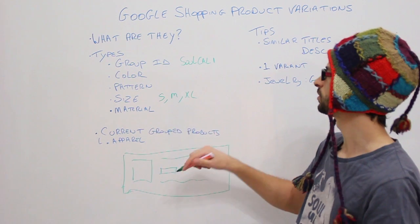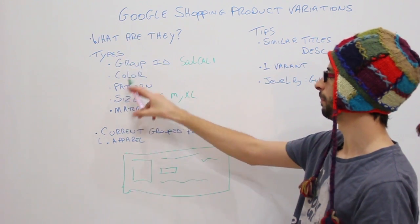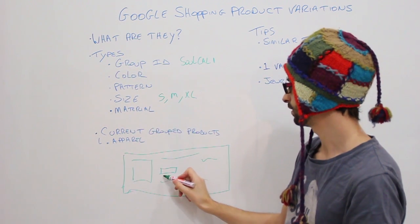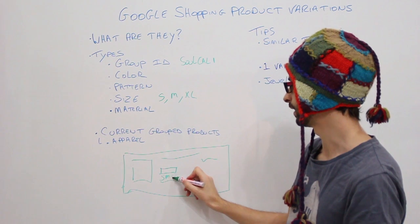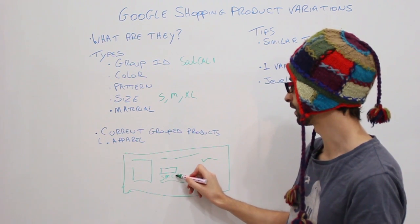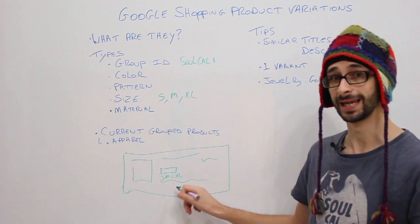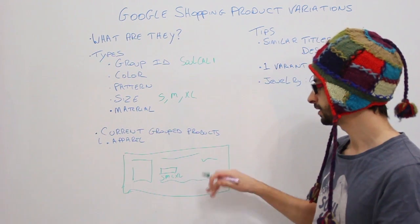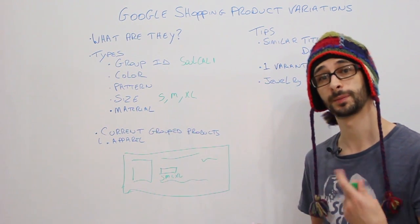For example, if we keep it simple with an apparel product, the size, you can see the S, M, and XL or large and XL. You can see that in Google Shopping and this can be a benefit.